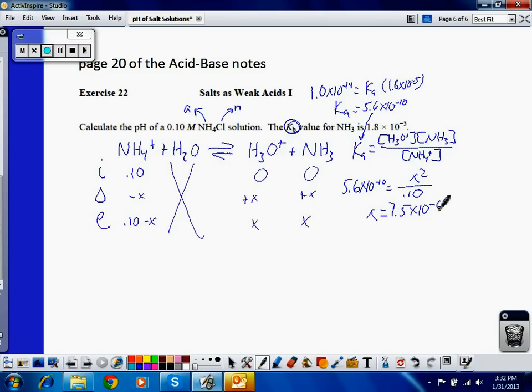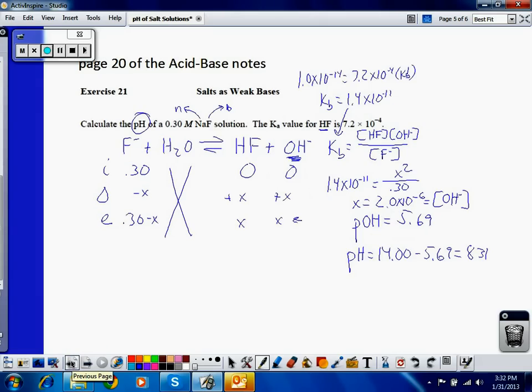And X is equal to 7.5 times 10 to the negative 6th. And that is equal to hydronium, which is a good thing because now all I have to do to find the pH is take the negative log of that, which is equal to 5.13. So now I have the pH of that solution. And you can see it is acidic, just like in this last one. The pH is 8.31, which is basic because the pH is above 7. So that's how you deal quantitatively with a salt solution that is acidic or basic.